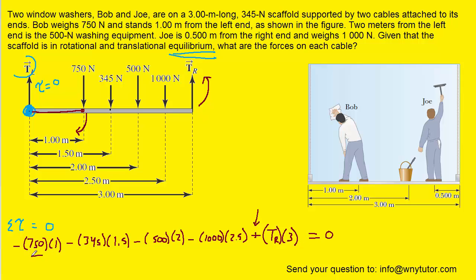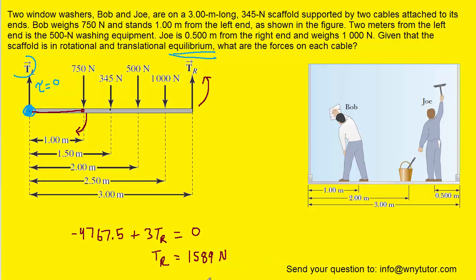Now we can pick up our calculators and simplify this term, in fact, all those terms. Why don't we go ahead and add this term over to the right hand side and then divide by 3 to solve for TR. And when we do that, we see that T sub R or the tension in the right hand rope is 1589 newtons. If you need that in kilonewtons, you can just move the decimal over three places to the left. And so that's going to give us approximately 1.59 kilonewtons.